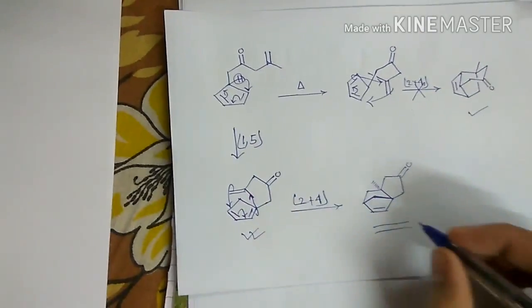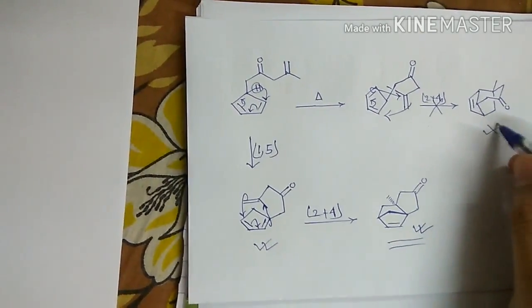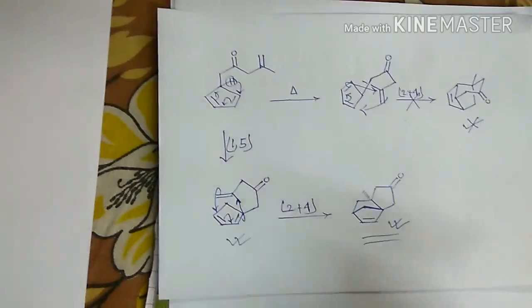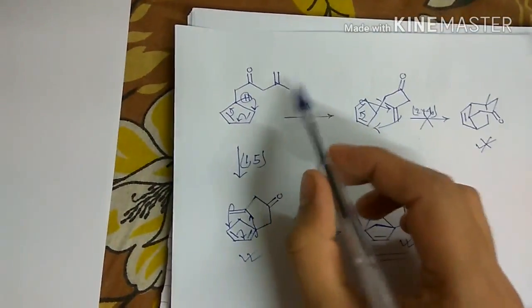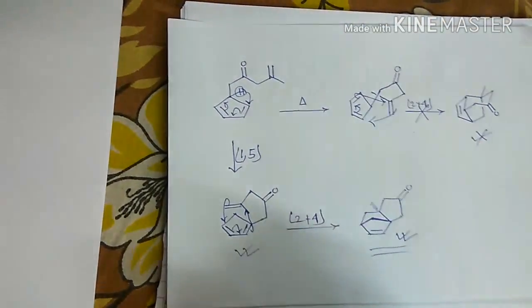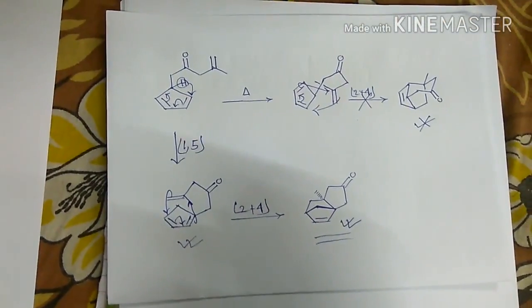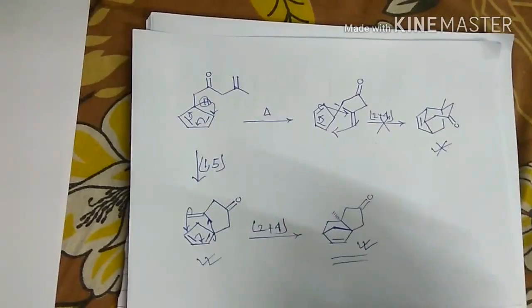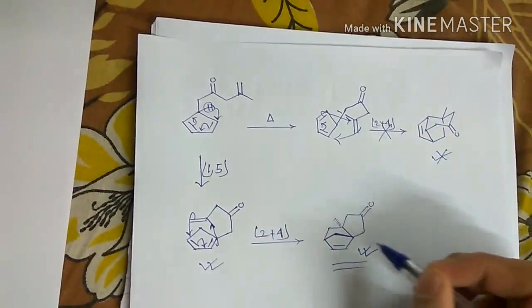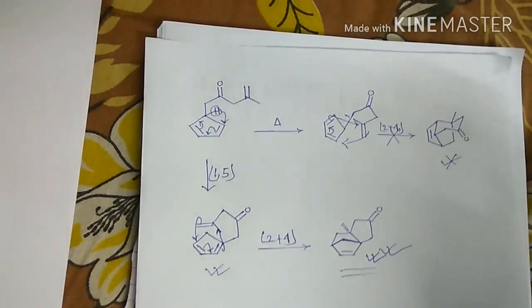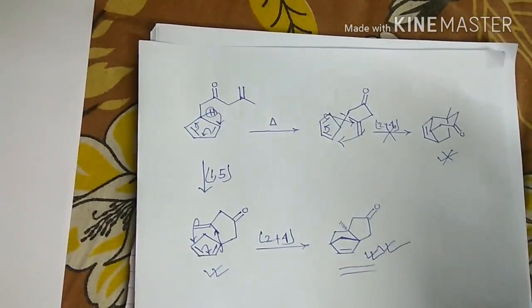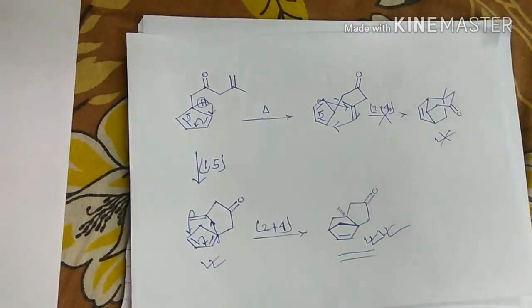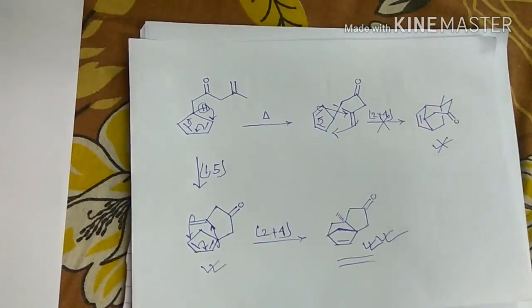Now this can undergo Diels-Alder reaction to give this. This is same 2 plus 4 cycloaddition to give this one. So we get this one and we don't get this one. So this proves that in normal case when there is no electrophilic substituent here, the sigmatropic rearrangement is much more faster than Diels-Alder reaction to get solely this product. So this is clear.